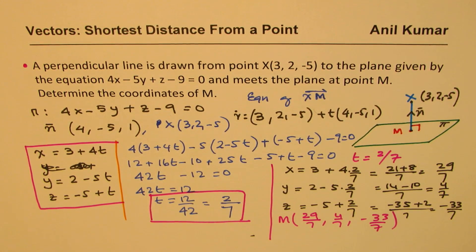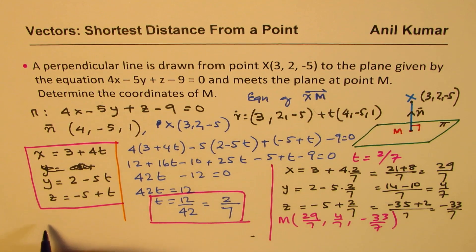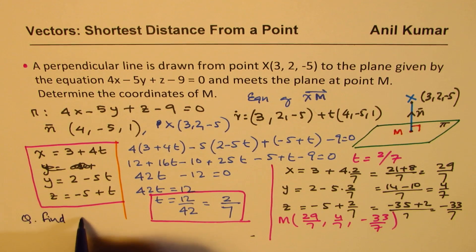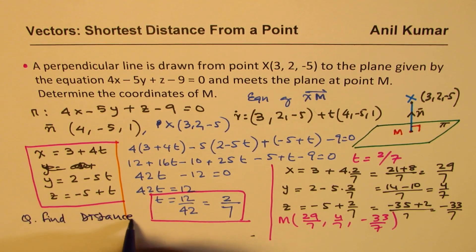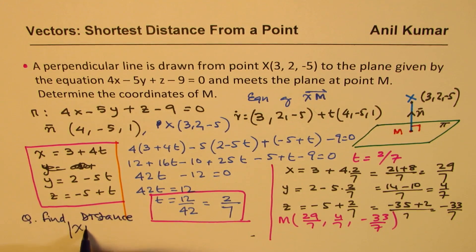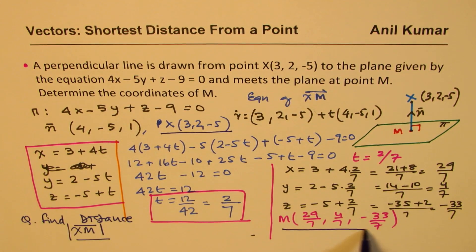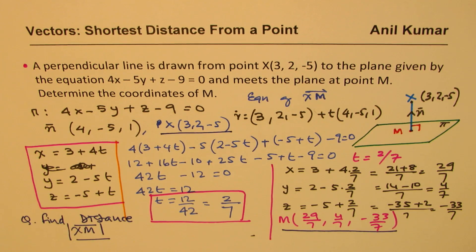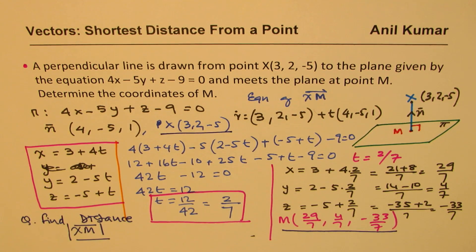Now that we have both X and M, the remaining exercise is to calculate the distance from X to M — that is the shortest distance from the point to the plane. I hope with this you understand how to find the distance from a point to a line or from a point to a plane. Feel free to share my videos with your friends, and if you like and subscribe, that'd be great. Thanks for watching and all the best.